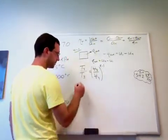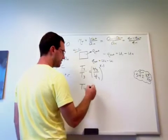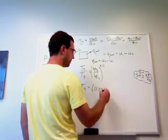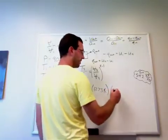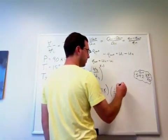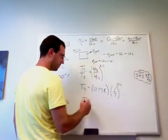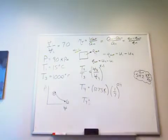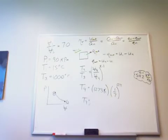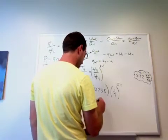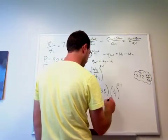And so solving for T4, I have T3, which was 1273, and then times 1 over 7 to the 0.4. So now I've got T4, 584.5 Kelvin.